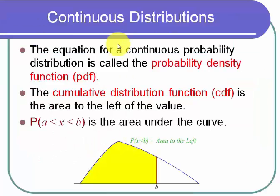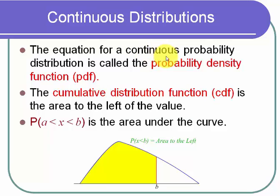Now let's talk about what a continuous distribution is. The equation for a continuous probability distribution is called a probability density function. A continuous random variable means it could be any number within an interval — either between 0 and 1, or even between negative infinity and infinity. We're not talking about discrete random variables with maybe 10 different possibilities or only whole numbers. Now the possibilities are all numbers on the number line or all numbers between two fixed points.